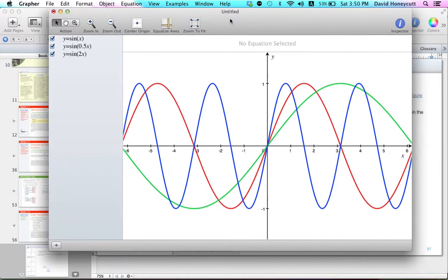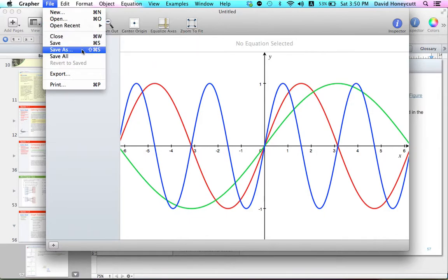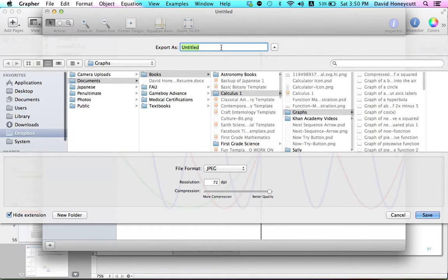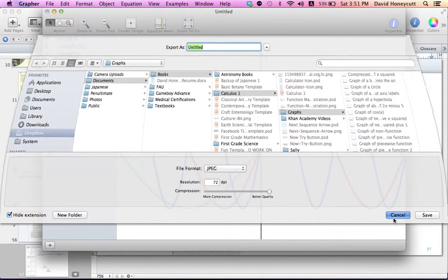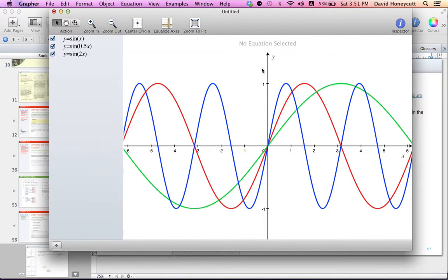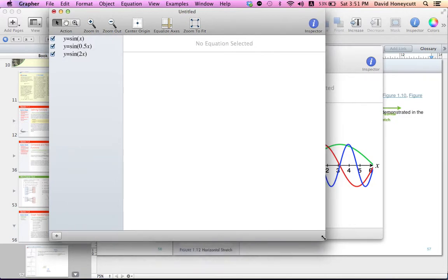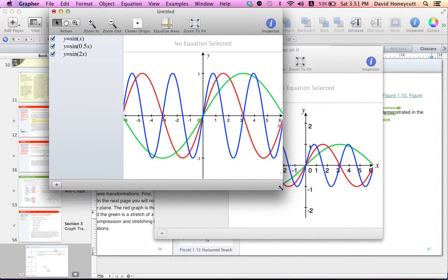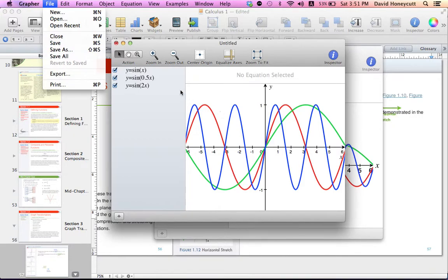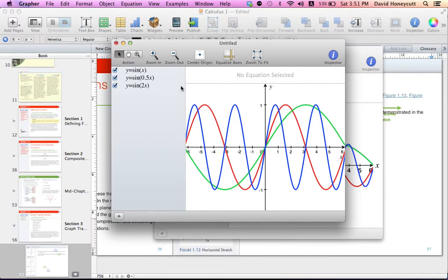When you want to export this, go to file. Do not do save because that will save an actual Graffer file, so export. It exports the length and width that your window is at right now, so I want this to be more of a square graph, not exactly a rectangle like it is now, so I'm just going to drag it to where it's like that. So when I export it, file export, it's going to look just like this with the same size and dimensions. You have to keep in mind that when you export, you have to adjust your window to where it looks how you want it to look.